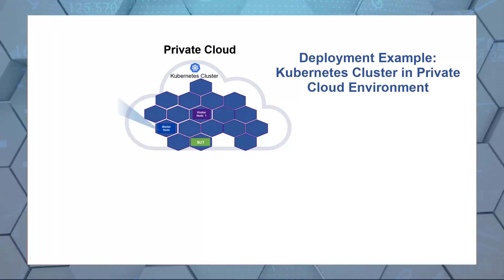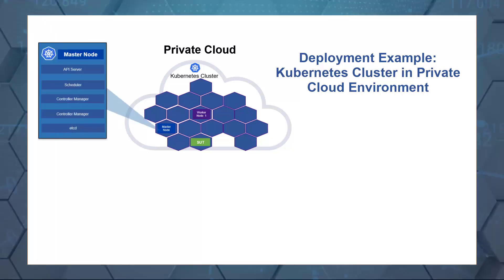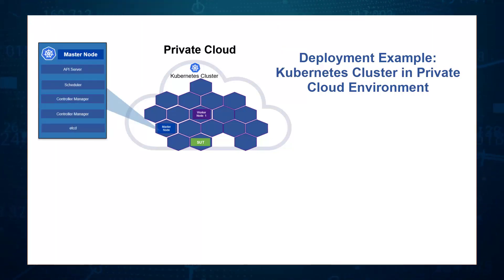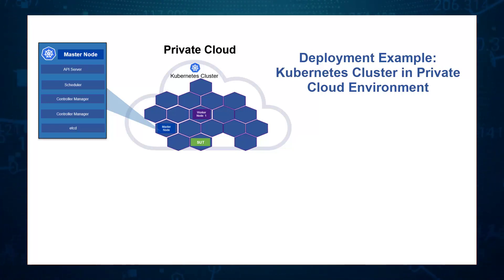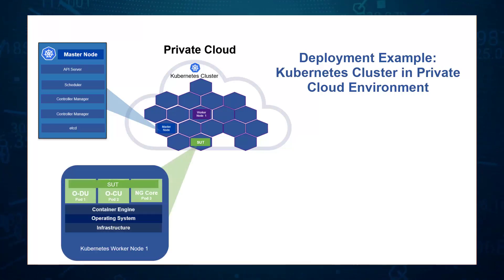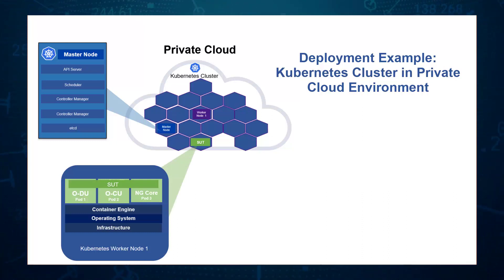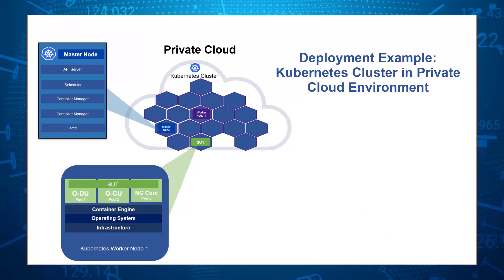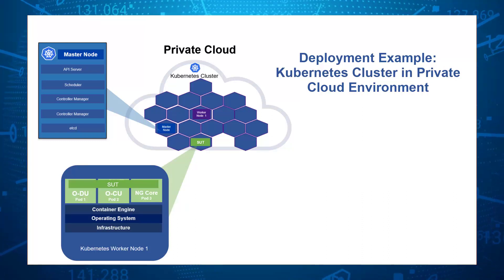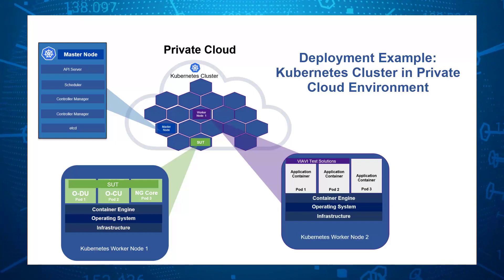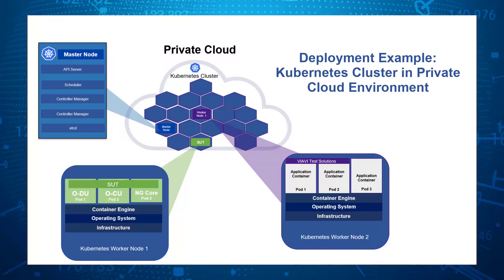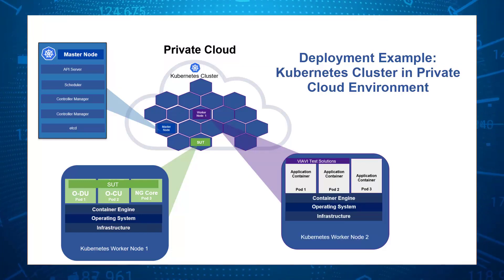In this private cloud cluster we are showing the master node acting as a controller for the cluster, the system under test which is ODU, OCU and core, each running in an application container in worker node 1, and the TM500 Cloud is deployed in the Kubernetes worker node 2 in the application container.